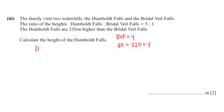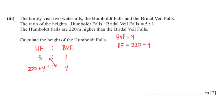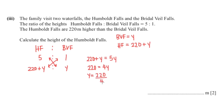Now I'll write the ratio: Humboldt Falls to Bridal Veil Falls is 5 to 1. We know Bridal Veil Falls is y and Humboldt Falls is 220 plus y. Using cross multiplication: 220 plus y equals 5y, so 220 equals 4y, therefore y equals 220 over 4, which gives 55.